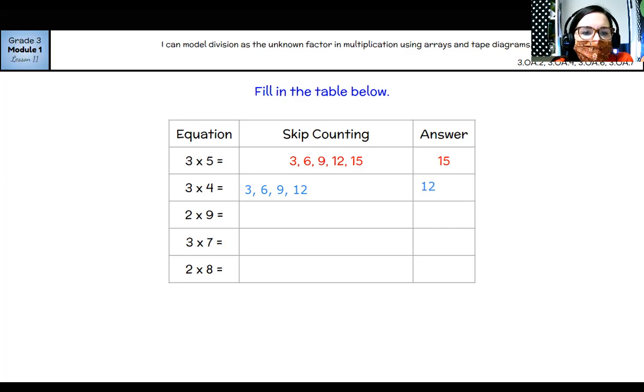All right, two times nine. So I'm going to skip count with my twos there. So two, I got to go nine times: four, six, eight, 10, 12, 14, 16, 18. Let me double count. One, two, three, four, five, six, seven, eight, nine. Yep. That's nine. So that means that my answer over here is going to be 18.